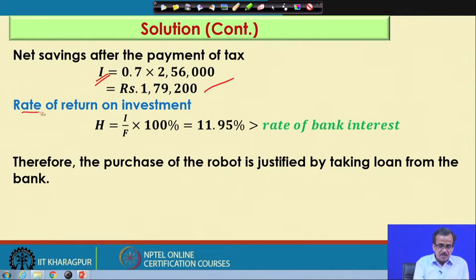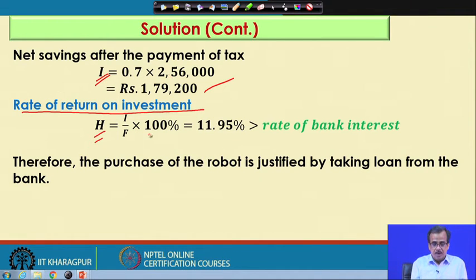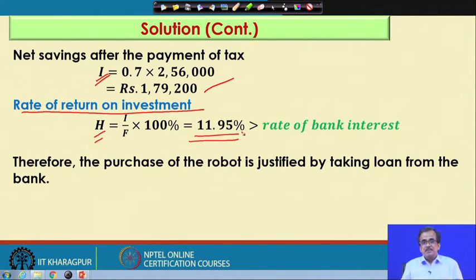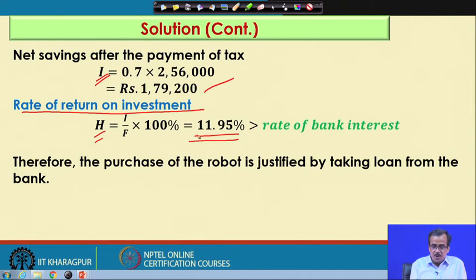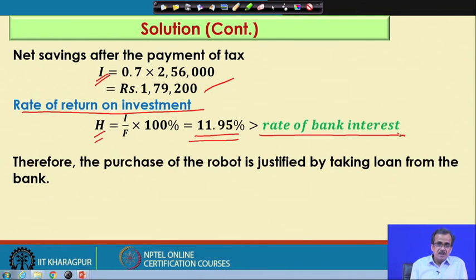Now, rate of return on investment is denoted by H and that is nothing but I divided by F. So, F is the capital investment, I is the net saving after the payment of tax, multiplied by 100 percent, and this is nothing but 11.95 percent. The rate of bank interest is around 10 percent. So, this particular rate of return on investment is more than the rate of bank interest, and moreover the payback period was less than the techno-economic life. So, both are favorable.